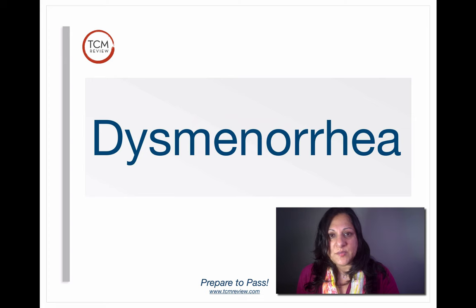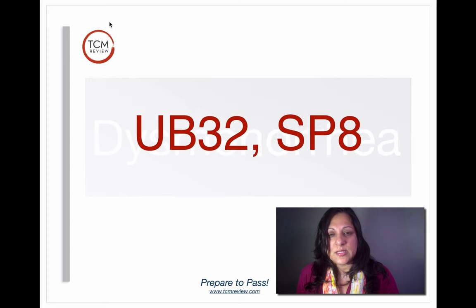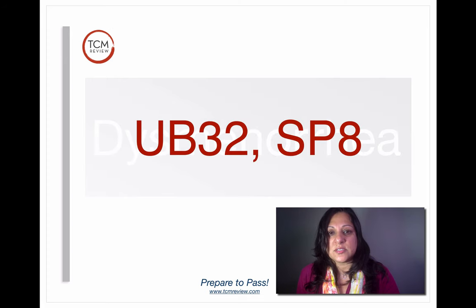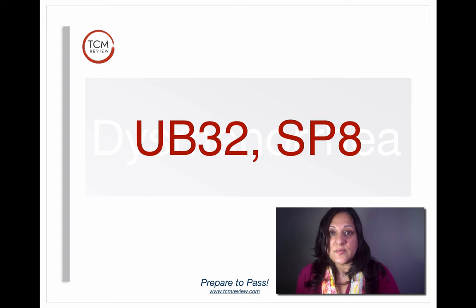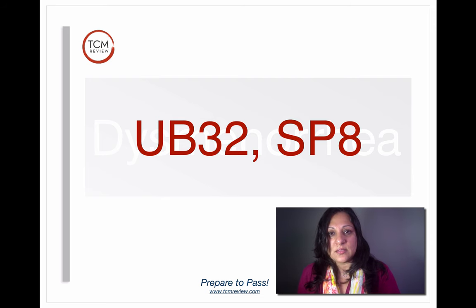Then we have dysmenorrhea, treated with UB32. It is on the sacrum and is very good at moving blood and addressing excess in the lower jiao. And then we have Spleen 8, which is a xi-cleft point and helps with painful menses.